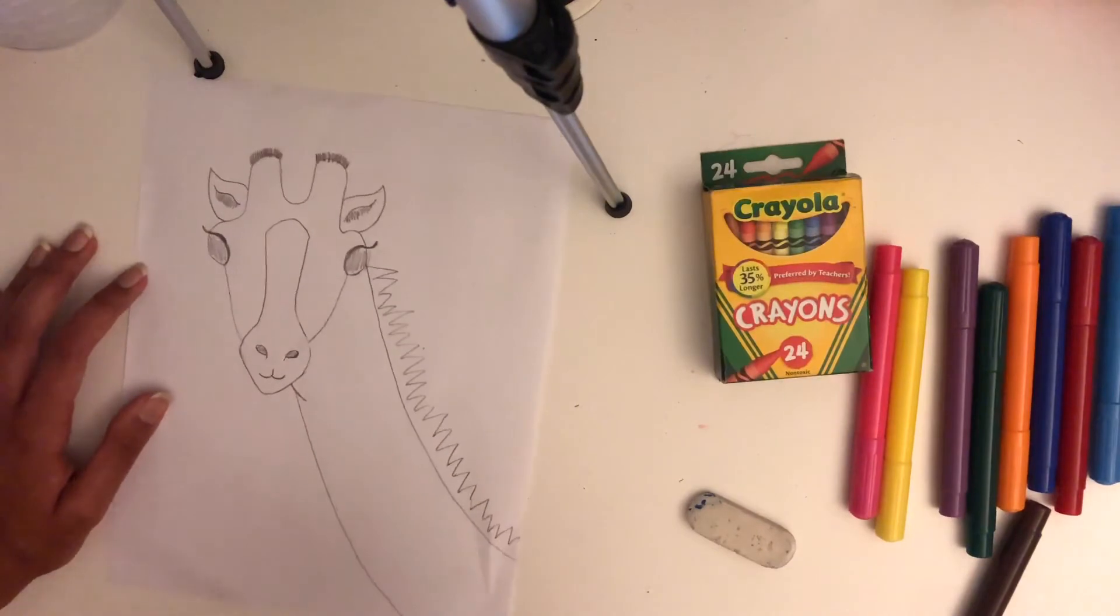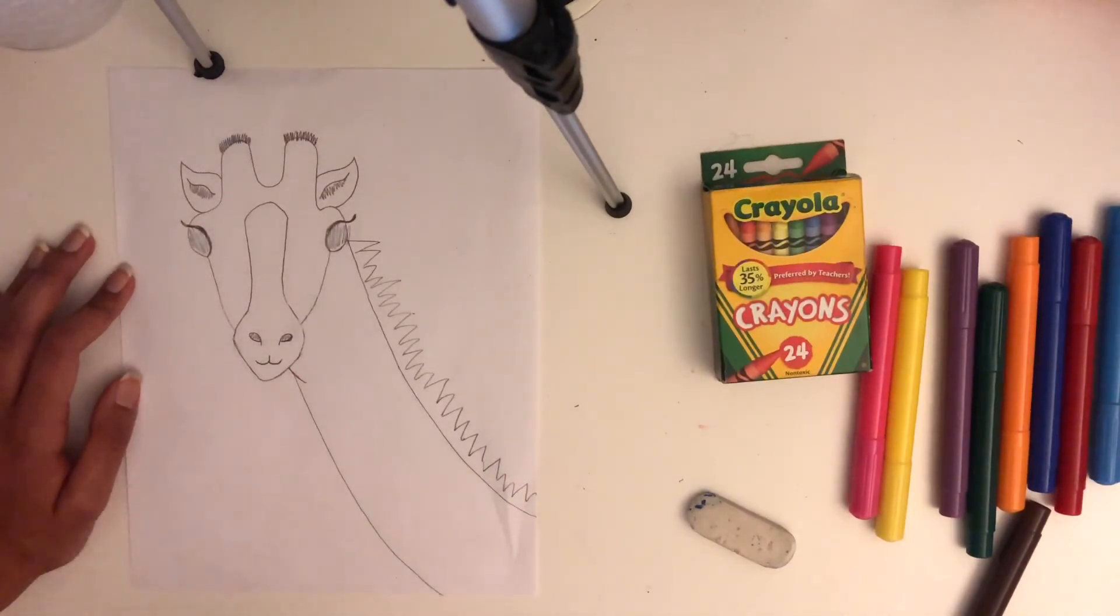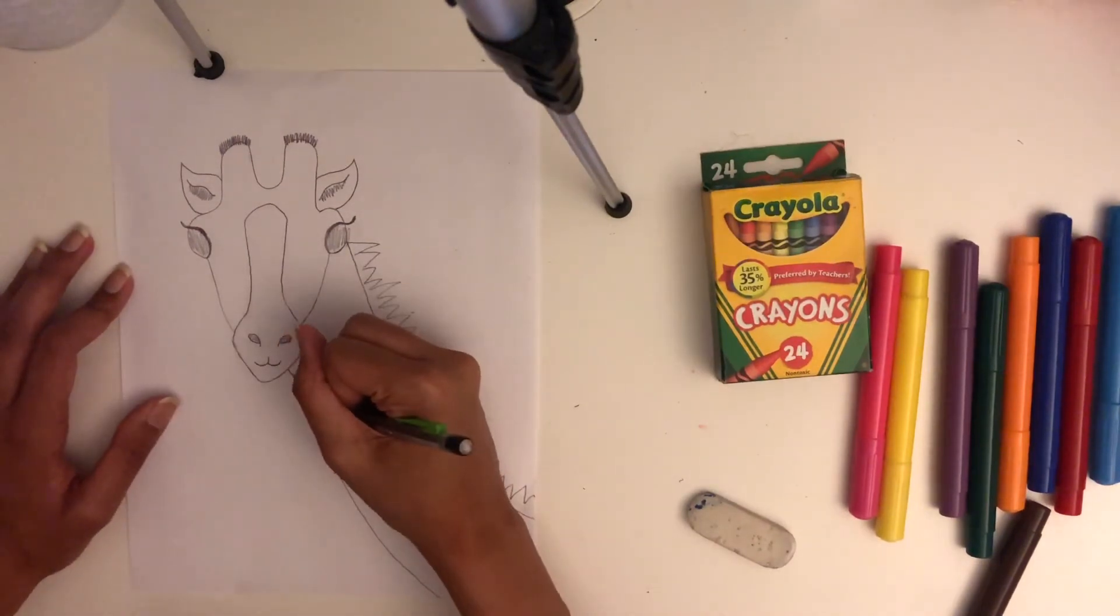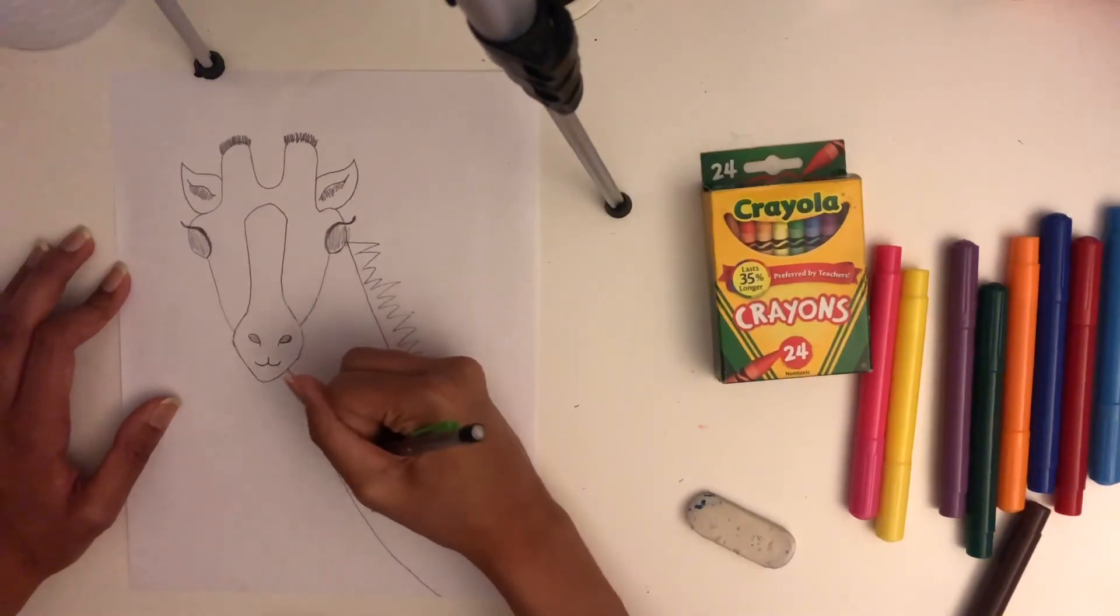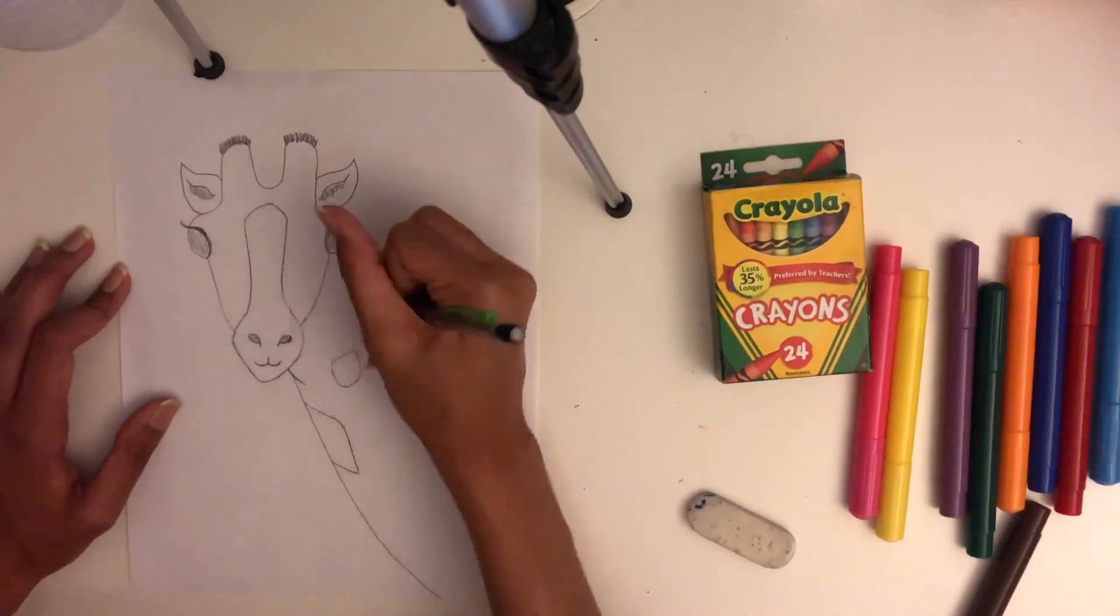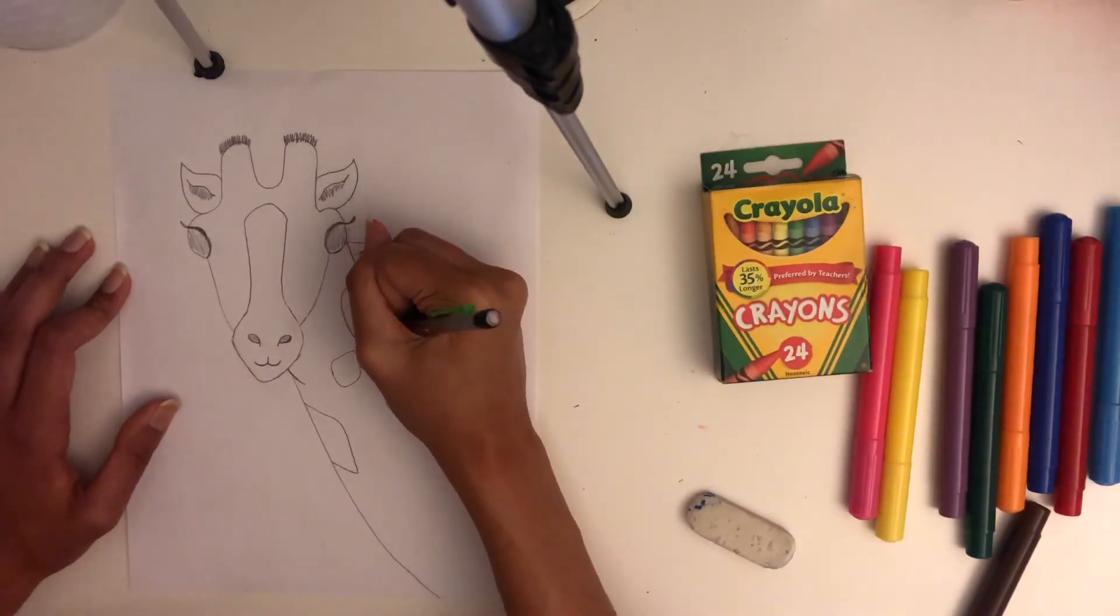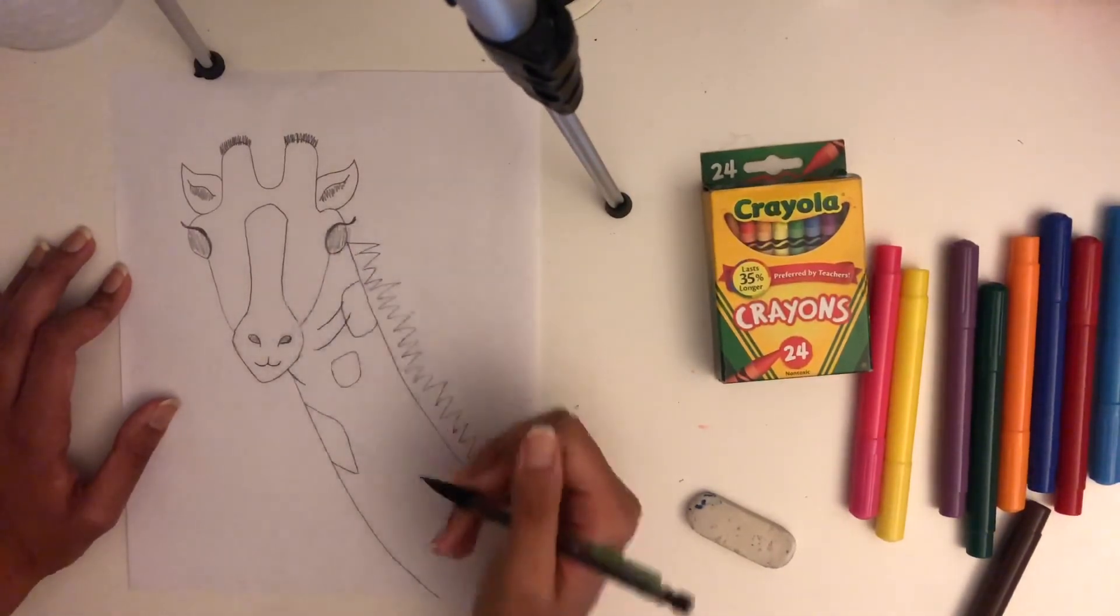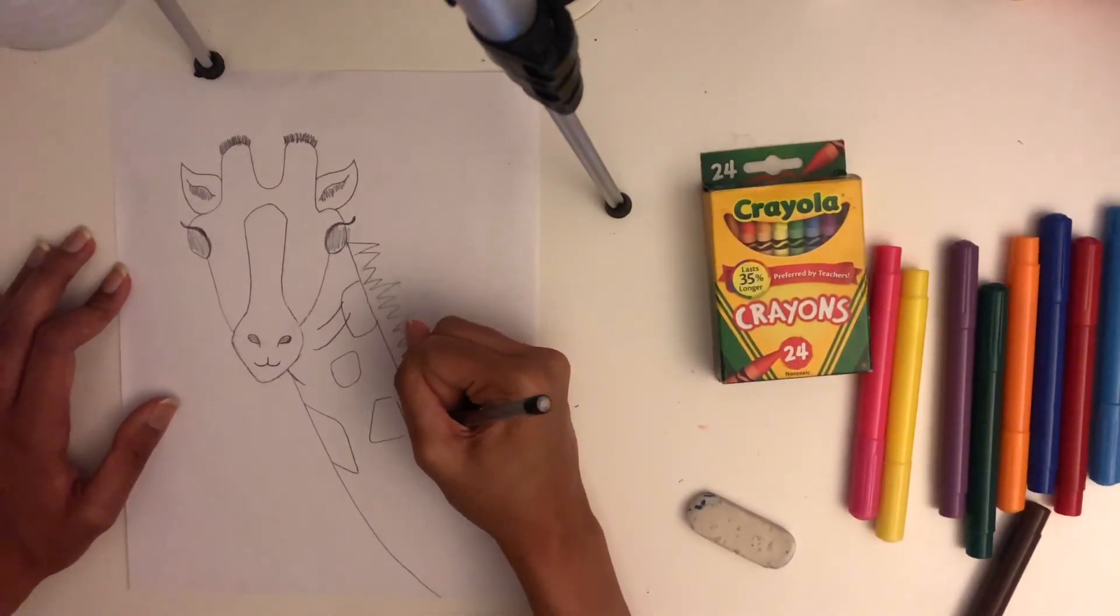And now for the fun part, the spots of the giraffe, like we did in our warm-up with different kind of shapes. I'm just going to use that as inspiration to put my spots all over. So right over here, I'm going to do a kind of diamond-ish shape. And I'm just going to put spots wherever I feel like would look best. I'm also going to add two lines here on the neck. And so just continue on doing kind of bigger spots on the neck for now.